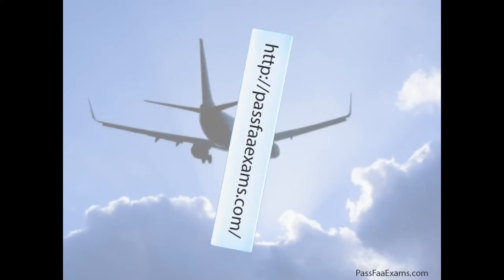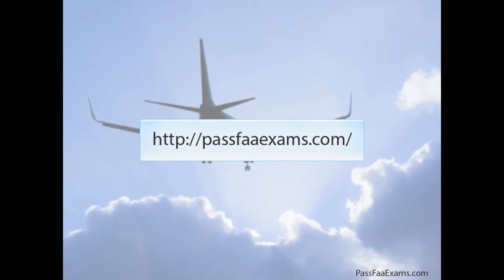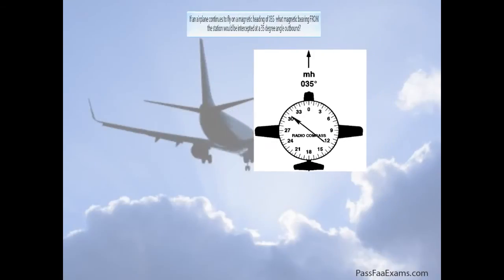As usual, we at Pilot Training Solutions have the habit of taking very difficult concepts and turning them into simple problems a child can solve. So first, let's take a look at the question. It says for figure 18, if an airplane continues to fly on a magnetic heading of 035,